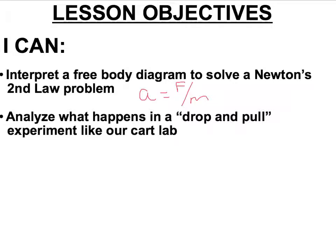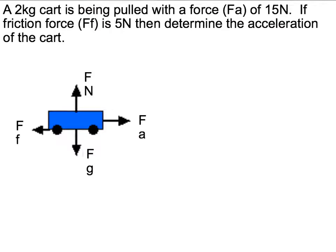We're going to be doing some experiments with carts and the motion detector, like we've done before. But one thing I want you to be able to do is recall things we've learned before. In our last unit, we looked at free body diagrams, and here's an example of one with a cart. We have a normal force and a force of gravity, and you can tell by these vectors that those forces are equal and opposite.